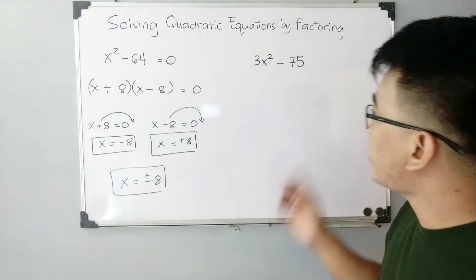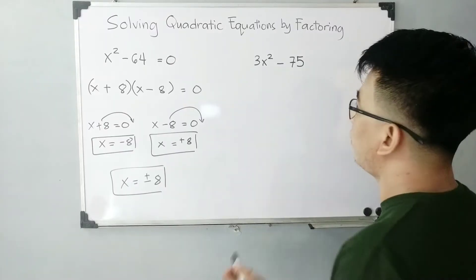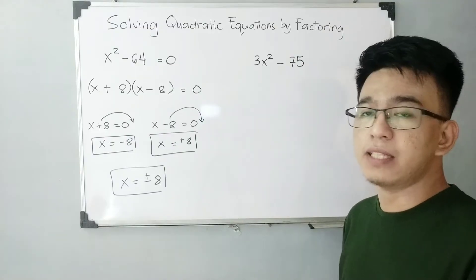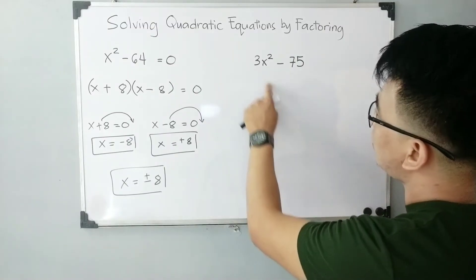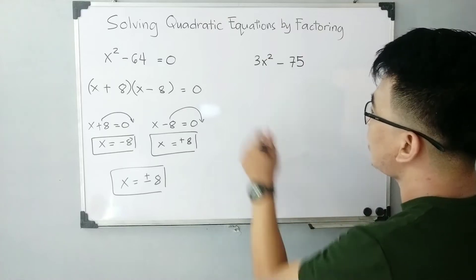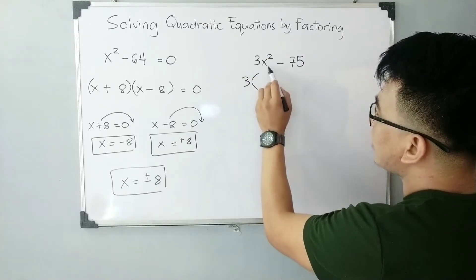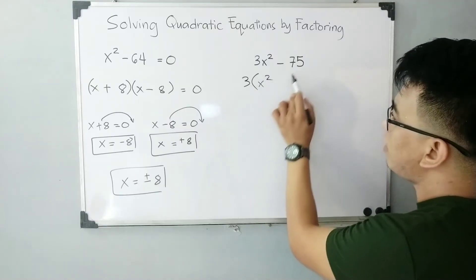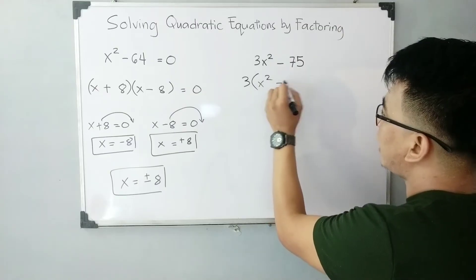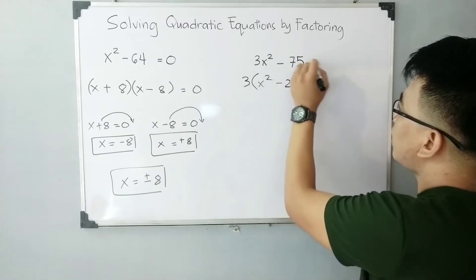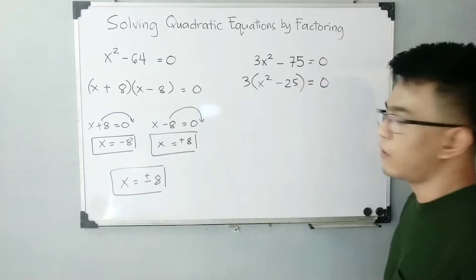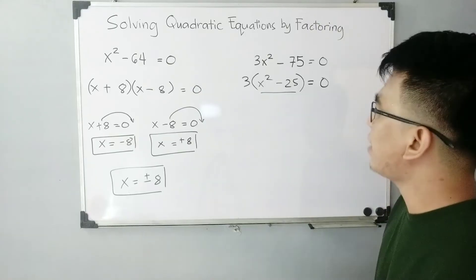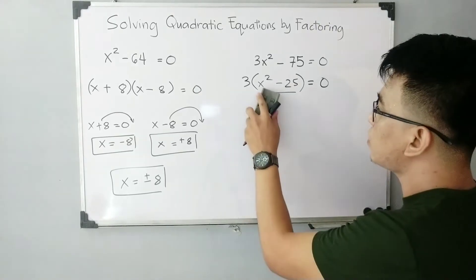Let's move on to the next example. We will first use common polynomial factoring. We have 3x squared minus 75 is equal to zero. The common factor is 3, so we factor out 3: 3 times (x squared minus 25) is equal to zero. Now as you can see, we can use the pattern of the sum and difference of two squares.